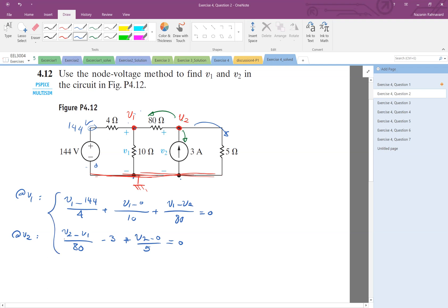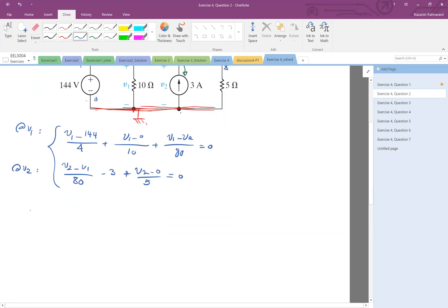Two equations, two unknowns. Let me arrange them. V1 times one-fourth plus one-tenth, plus V2 times negative one-tenth equals 144 over 4.